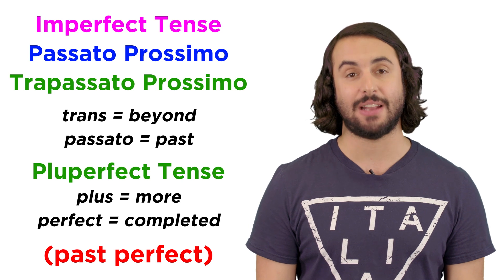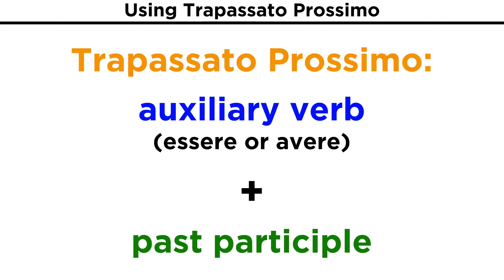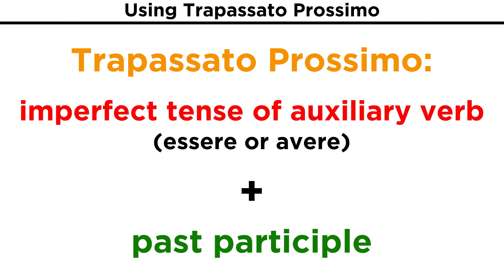Now let's learn how to use this tense. First, recall that passato prossimo is constructed with the auxiliary essere or avere, plus a form of the past participle. The trapassato is another compound tense like this, and follows the same construction. We just need a form of the auxiliary to make the action more past than the previous one. This can be achieved by substituting the present form of to have or to be with the imperfect of the same.